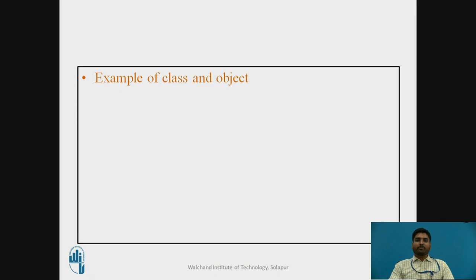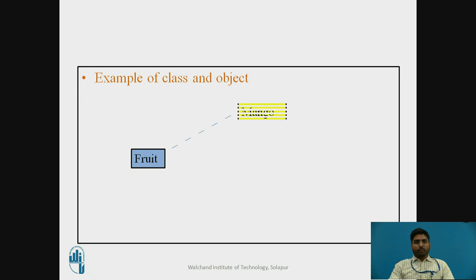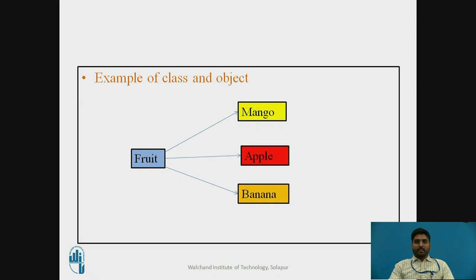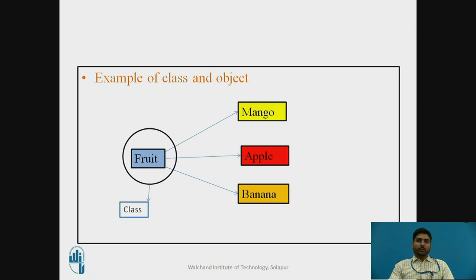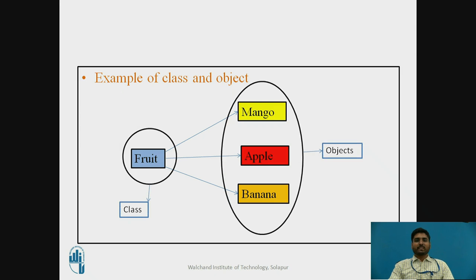Now the example of class and object using real-life entities: consider fruit. In fruit we have many types like mango, apple, and banana. Here fruit is the class, and mango, apple, and banana are objects — you can create any number of objects.